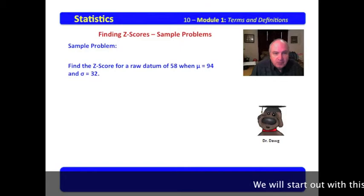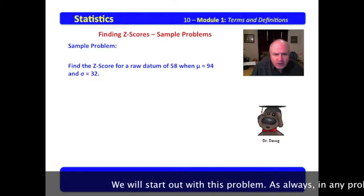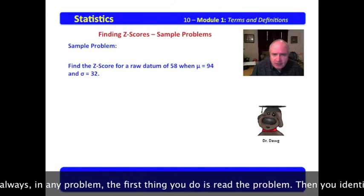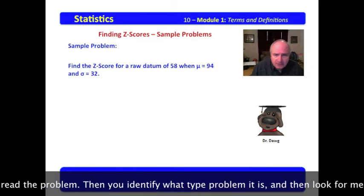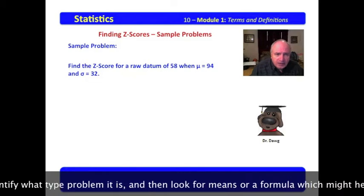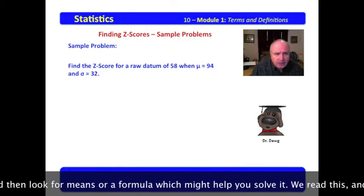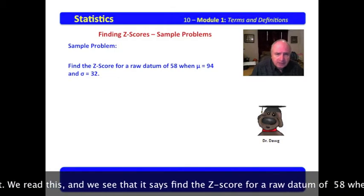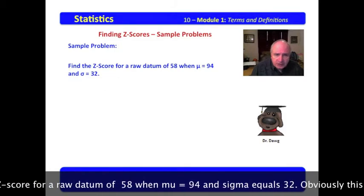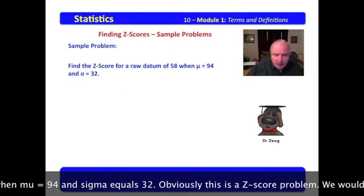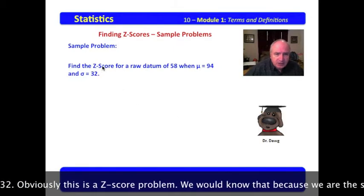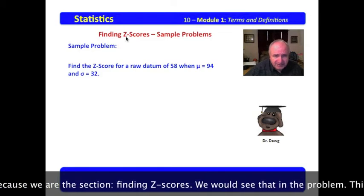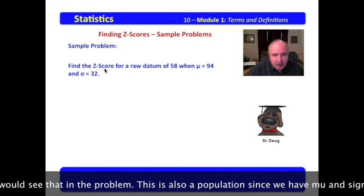We will start out with this problem. As always in any problem, the first thing you do is read the problem. Then you identify what type problem it is, and then look for a means or a formula which might help you solve it. We read this and we see it says find the z-score for a raw datum of 58, when μ = 94 and σ = 32. Obviously, this is a z-score problem. We would know that because we're in the section finding z-scores, but we would see that in the problem.